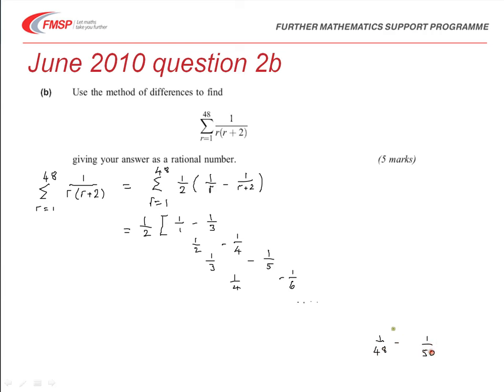And if we do the line before, it's 1 over 47, minus 1 over 49.